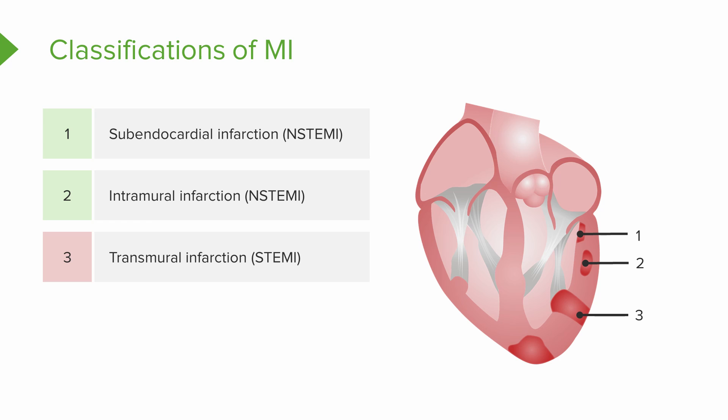We've got this picture here to help you understand how these all interact. Number four is another non-STEMI — so one, two, and four are non-STEMIs. This is a subepicardial infarction; you can see where it's located. This is a slide worth coming back to and reviewing because you'll hear these words used in real practice all the time. You want to be able to picture what this is and get a feel for how severe the patient's damage is to the heart wall.